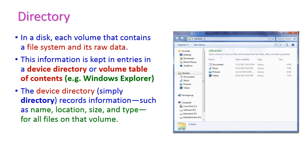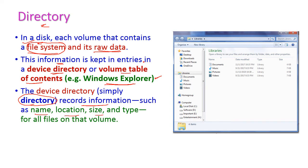Now let us see the directory. In a disk, each volume contains a file system and its raw data — raw data being the information about the file system. This information is kept in entities called the device directory, which is simply called the directory and is otherwise known as the volume table of contents. An example is Windows Explorer. The device directory records information such as the name, location, size, and type of all files.